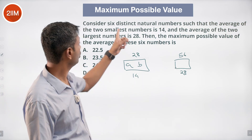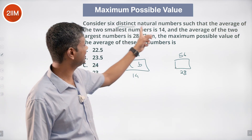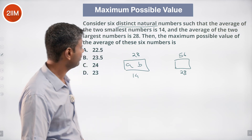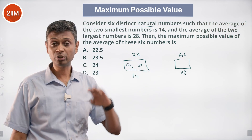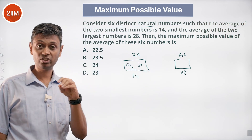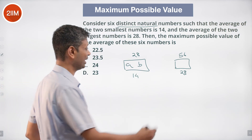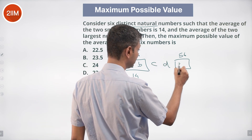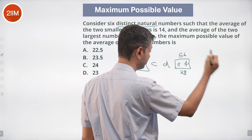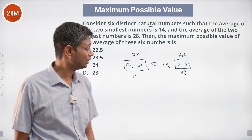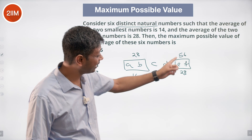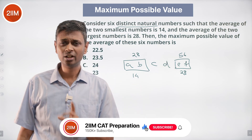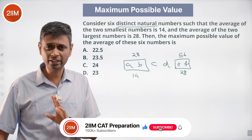We have distinct natural numbers written in sequence: a < b < c < d < e < f. So e and f are the two largest, adding up to 56. Note that 28 plus 28 doesn't work since the numbers must be distinct.